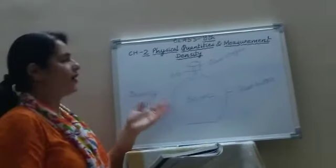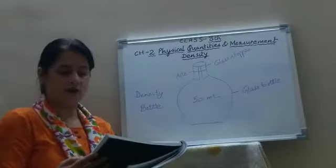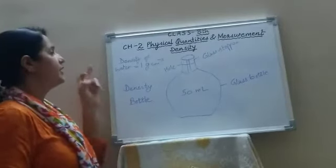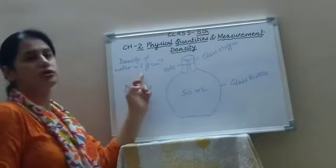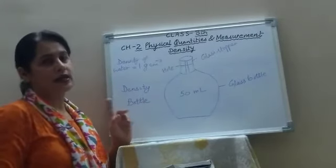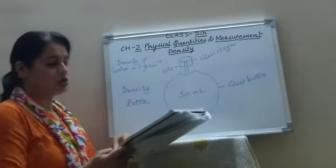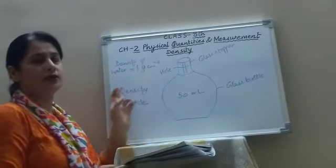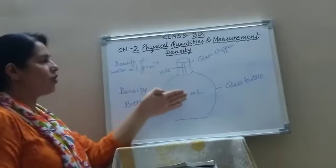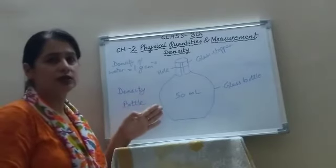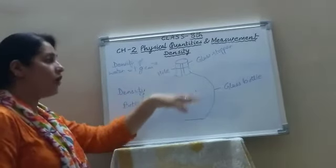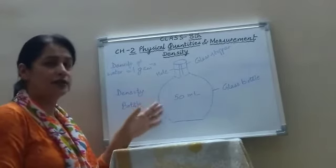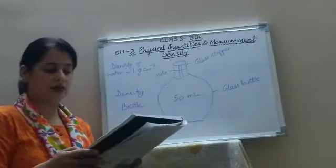Now children, a very important point: the density of water is equal to 1 gram per cubic centimeter. So the mass in grams of water used to fill this bottle will give you the volume of this bottle. The mass of water filled in it will give you the volume of this bottle.